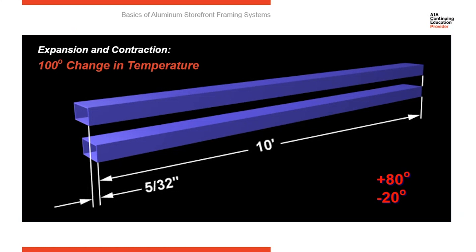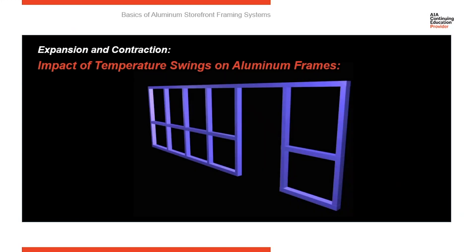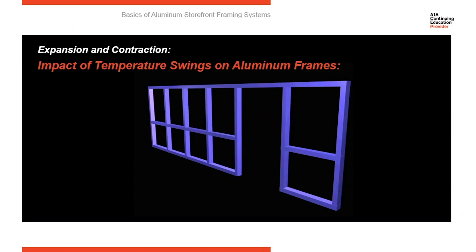So think about 20 feet, think about 30 feet — that's a lot of movement. Let me illustrate what happens if we don't properly plan for thermal expansion and contraction. Here's a storefront elevation with a door in it. As the horizontals expand during the day, they push into that door jamb and cause the door to bind up. So we've got to absorb that thermal expansion during the day.